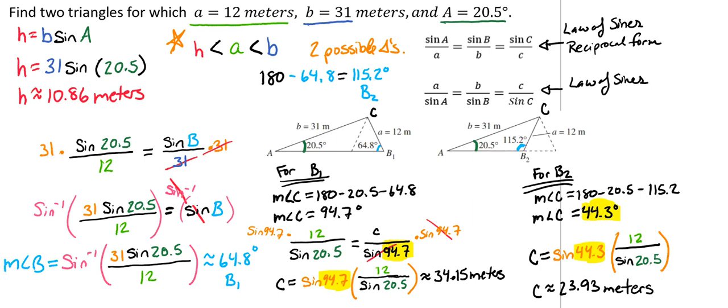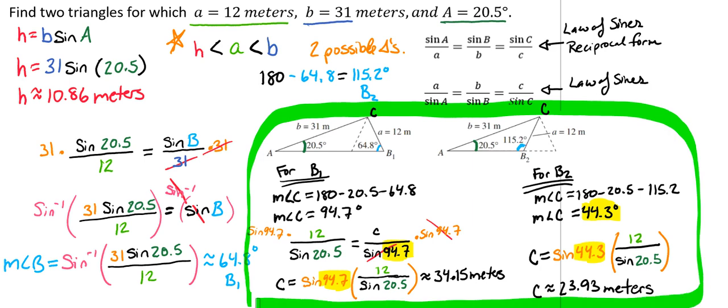And so we're done. We have found two triangles, and they're right here, our B1 and our B2. We have two triangles for which A is 12 meters, B is 31 meters, and A is 20.5 degrees.